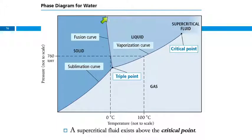The fusion curve is where it's going to transition between a liquid and a solid. The vaporization curve, where it goes between a liquid and a gas.